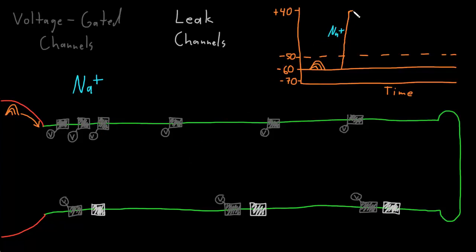The next thing we see happen to the action potential — basically just as fast as the membrane potential went from the resting potential to the peak — it then rapidly descends back toward the resting potential, and actually goes farther, becoming more negative than the resting potential, before leveling off. This part is called the falling phase, and it occurs because potassium starts to exit the neuron through a couple of types of channels.